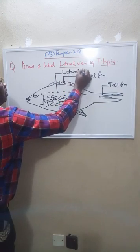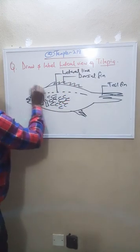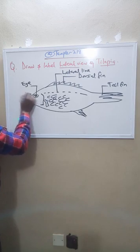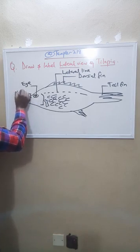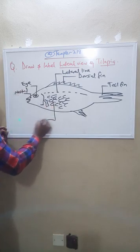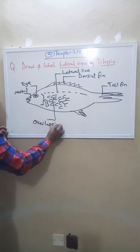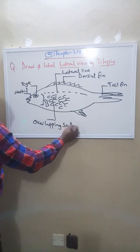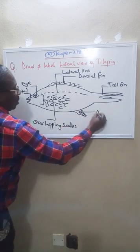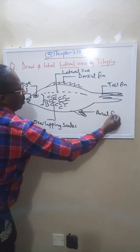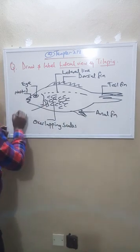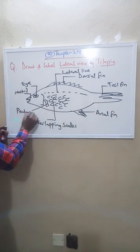Right, that is the eye. There's a nostril. That's a sketch. These are the overlapping scales, overlapping scales. This is the inner thing, all right. This is the pectoral thing, all right.